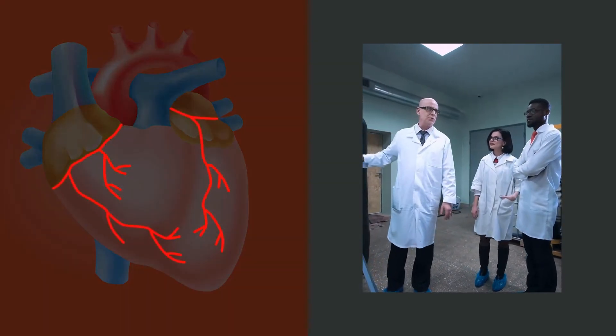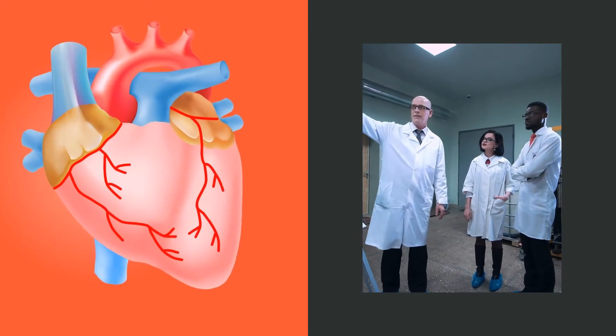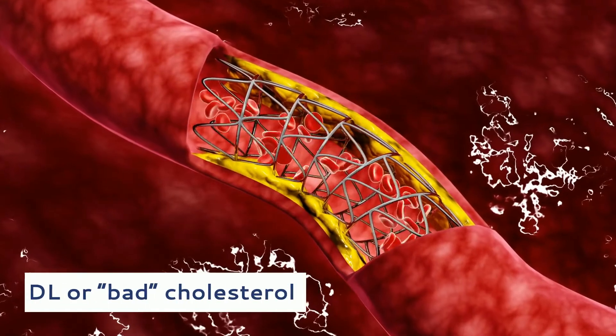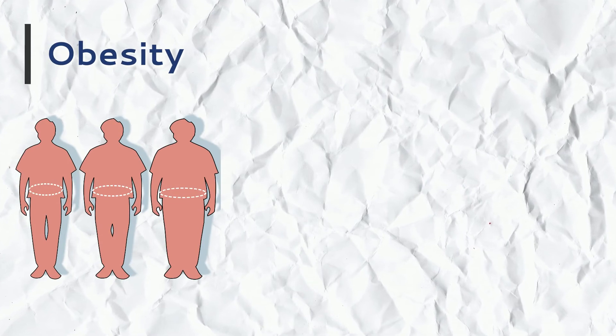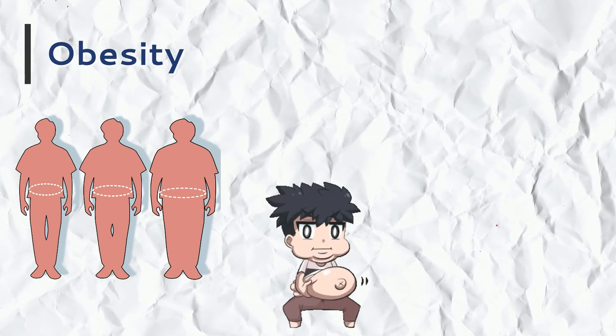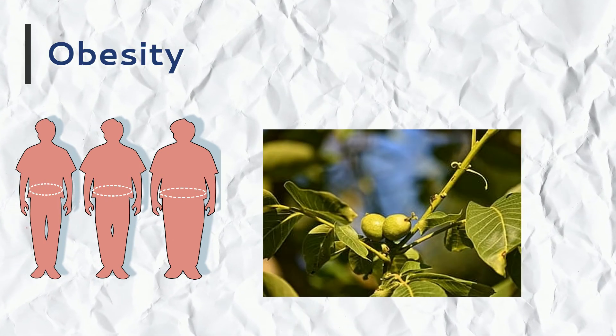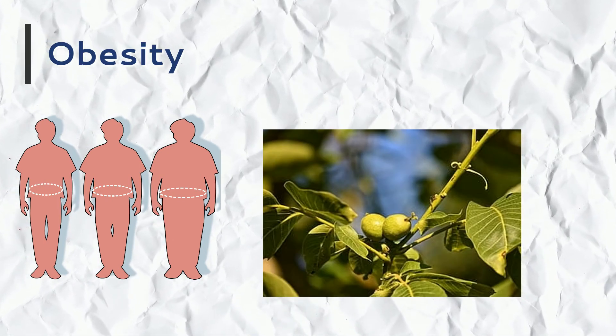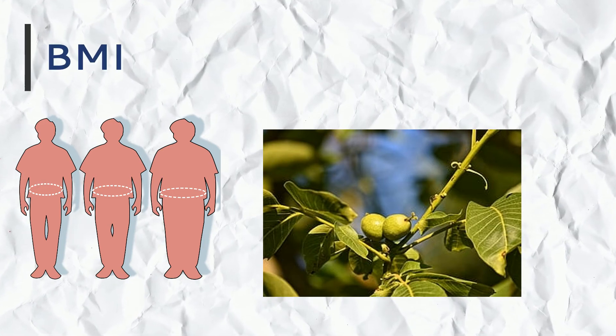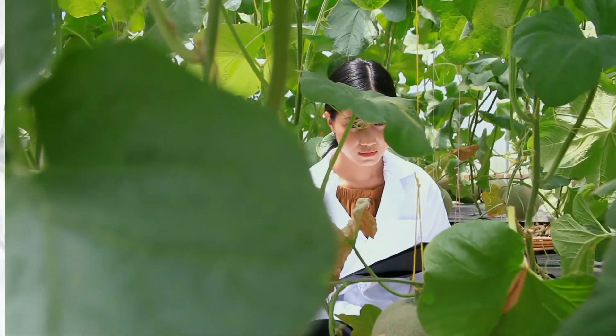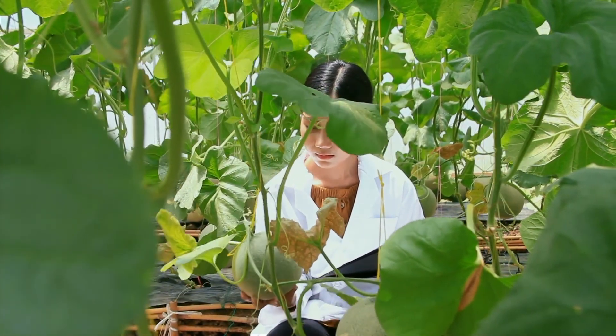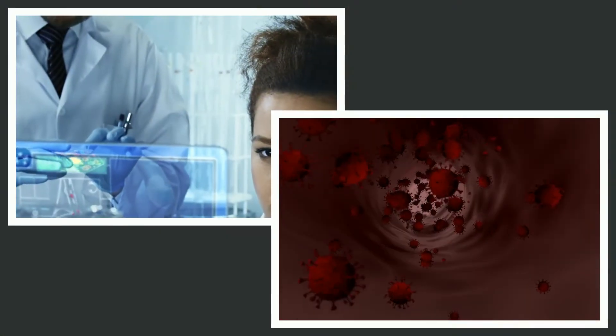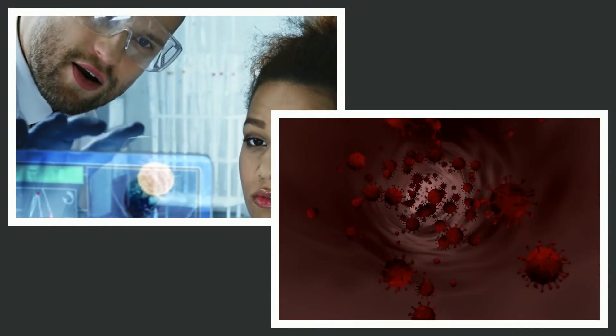Obesity: Polyphenol intake may also play a role in body weight regulation. One study compared the intake of flavonoids, a class of polyphenols, with body mass index (BMI) and waist circumference. Researchers found that a higher flavonoid intake was associated with lower BMI and waist circumference. These results are significant because obesity is associated with a higher risk for many chronic diseases.